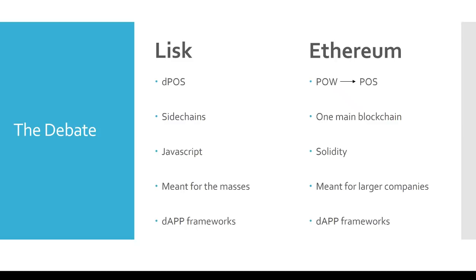Now let's get into the coding language that Lisk and Ethereum use to build decentralized apps. Everything in Lisk is built with JavaScript, which is the most well-known programming language in the world and what a vast majority of websites on the internet are coded in. The ability for programmers to use JavaScript to build decentralized applications on the Lisk network is one of their main claims to fame, since there are millions of programmers well-versed in JavaScript who could get onto the Lisk platform right away.